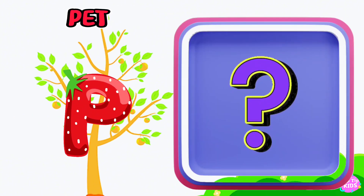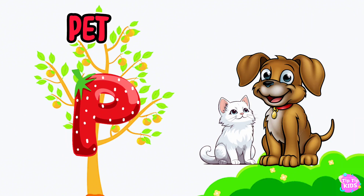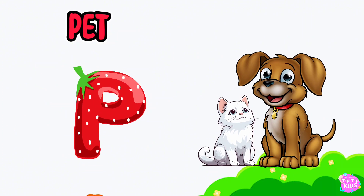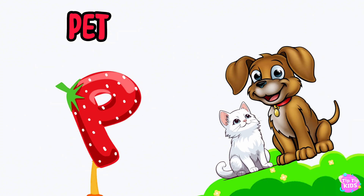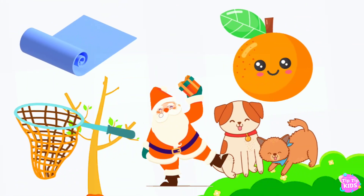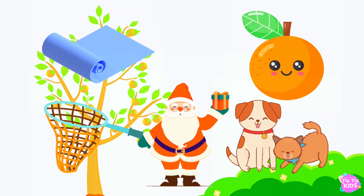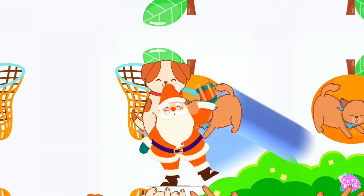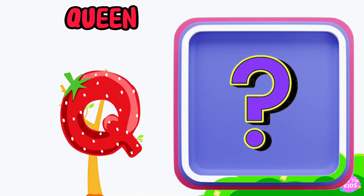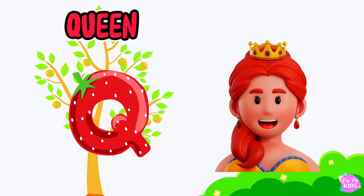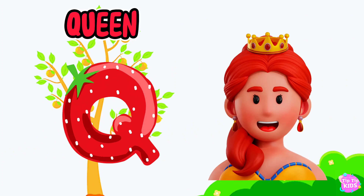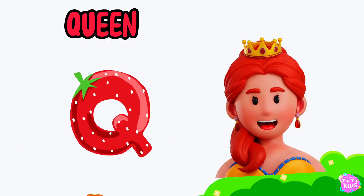P is for pet, f-f-pet. Q is for queen, c-c-queen.